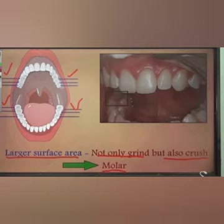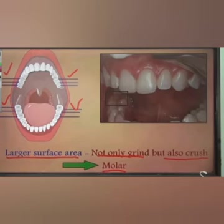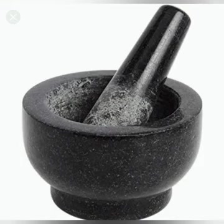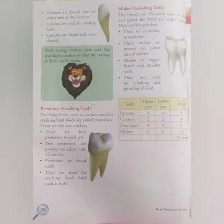There are six molars in the upper jaw and six in the lower jaw, totaling twelve molars in our mouth. Molars are bigger, flatter, and broader teeth used for crushing and grinding food, which is why they act like grinders.